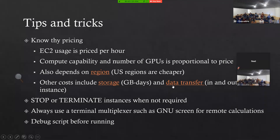One thing to know is that deep learning calculations often take a lot of time — not 40 seconds, but hours or even weeks. The flip side of using this instance is that you have to keep the instance running and your connection open if you want to keep the calculations going. But there is a workaround. I'm going to show you how to keep your calculations running even when you are not connected to the instance. For this purpose, I'm going to use something called a terminal multiplexer, such as GNU screen.